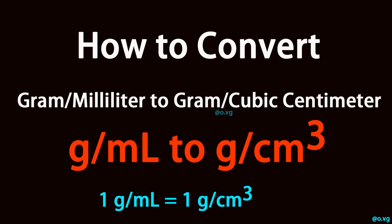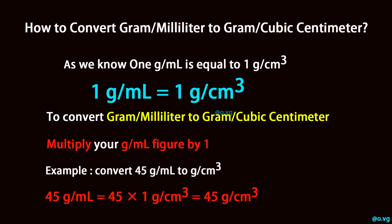How to convert gram per milliliter to gram per cubic centimeter? As we know, 1 gram per milliliter is equal to 1 gram per cubic centimeter.